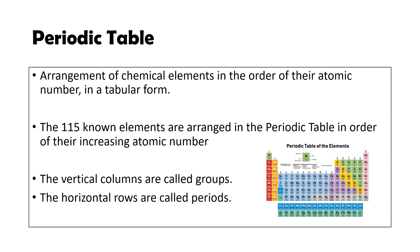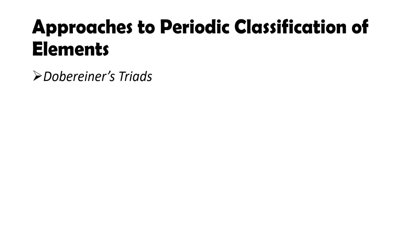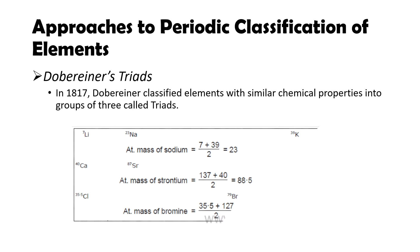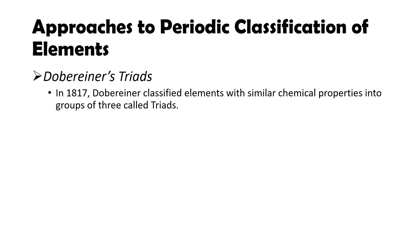Now let's look at the approaches to periodic classification before the modern periodic table. First was Dobereiner's Triads in 1817. Dobereiner classified elements with similar chemical properties into groups of three called triads. He noted that the atomic mass of the middle element in the triad is the arithmetic mean of the other two elements. For example, lithium has atomic mass 7 and potassium has atomic mass 39, so sodium's atomic mass is (7 + 39) / 2 = 23. This was Dobereiner's Law of Triads.